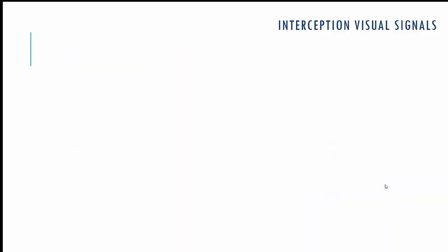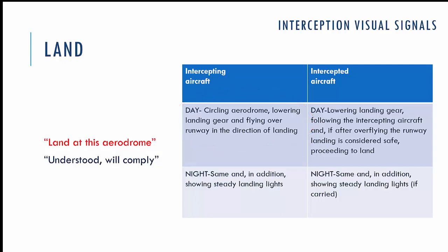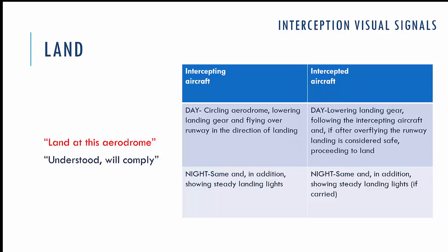If the situation gets worse, the intercepting aircraft may instruct you to land at a specific aerodrome. It circles the aerodrome in its traffic pattern, lowers landing gear, and flies over the runway in the direction of landing. If you accept this instruction, you extend your landing gear, follow the intercepting aircraft, and after overflying the runway — if you consider landing safe — you may proceed to land.